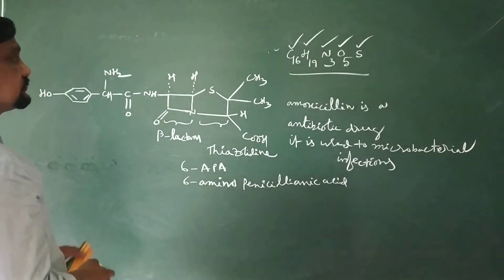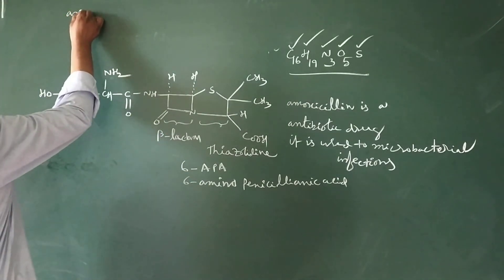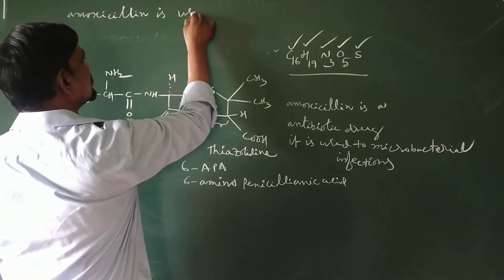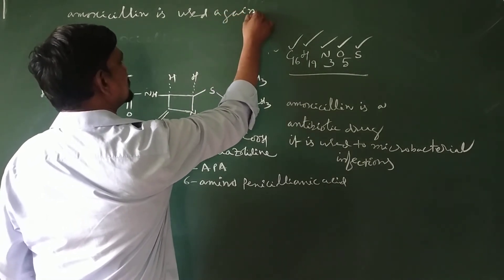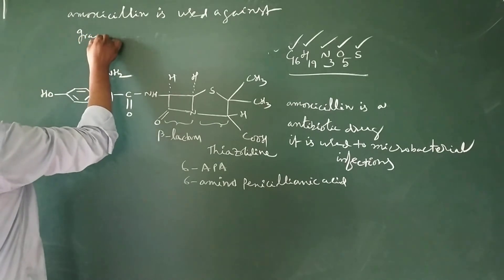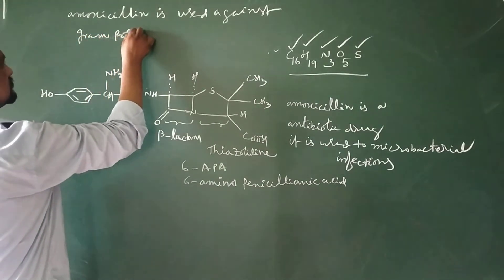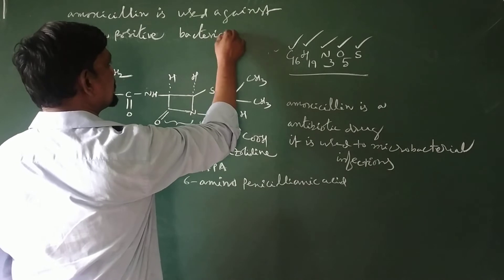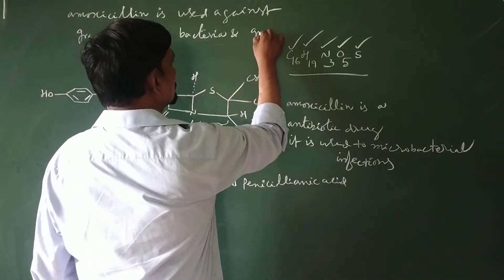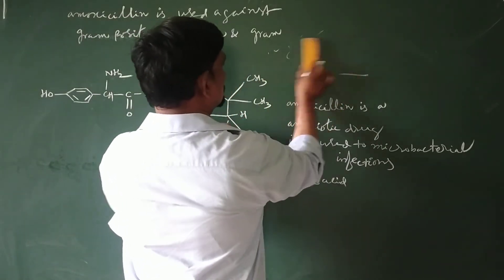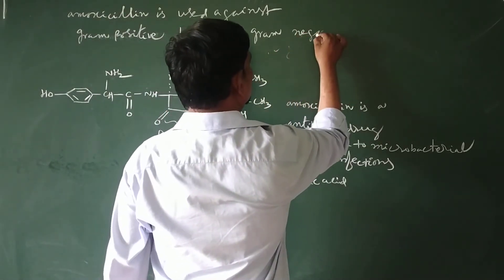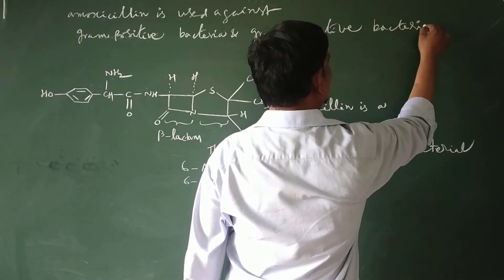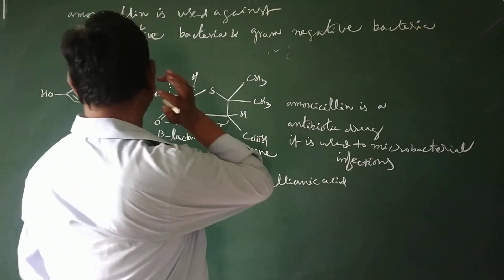Amoxicillin is used against gram-positive bacteria and gram-negative bacteria.